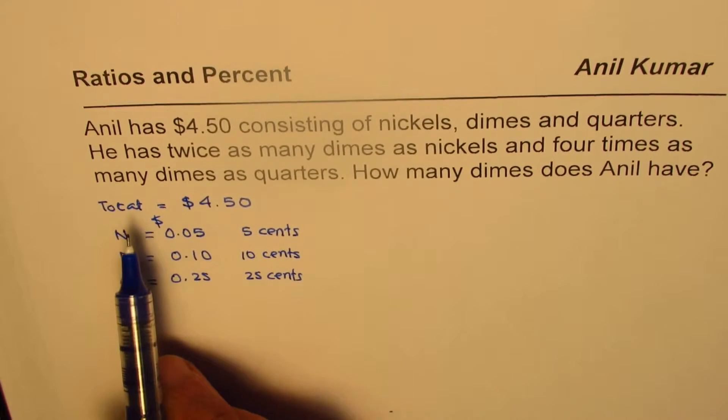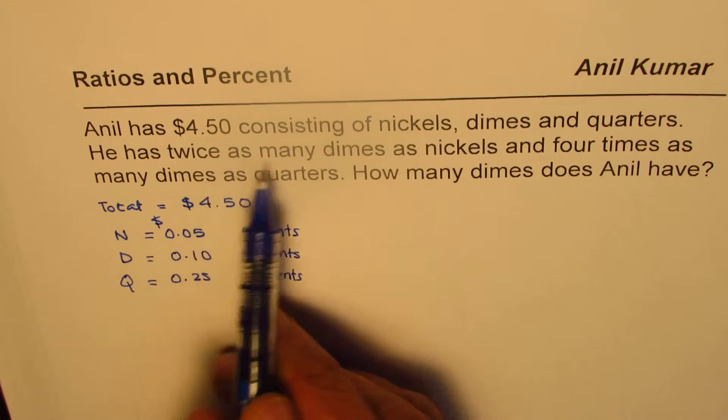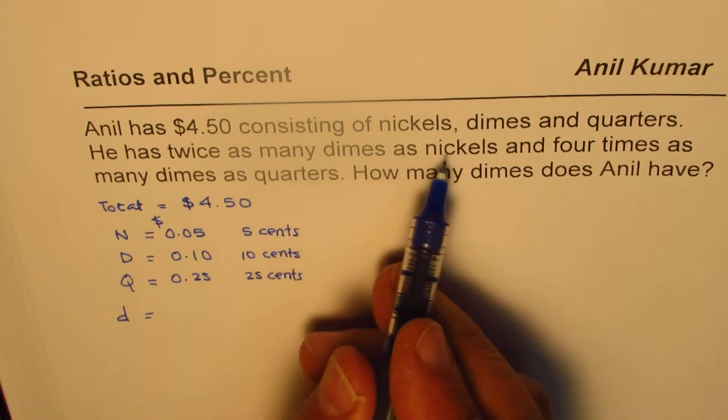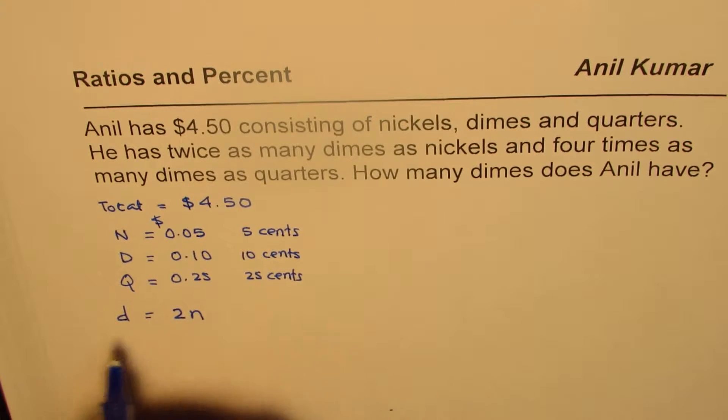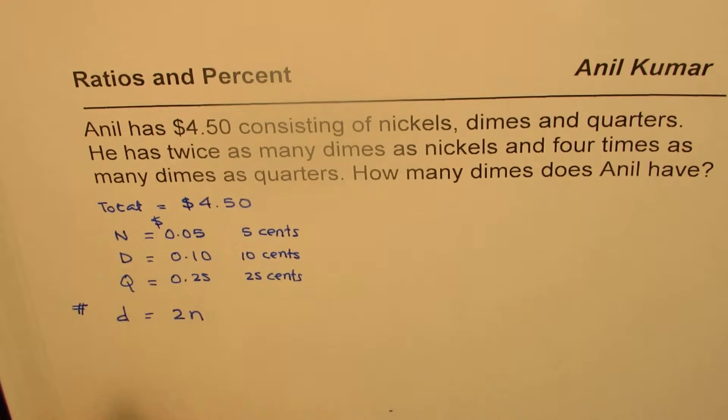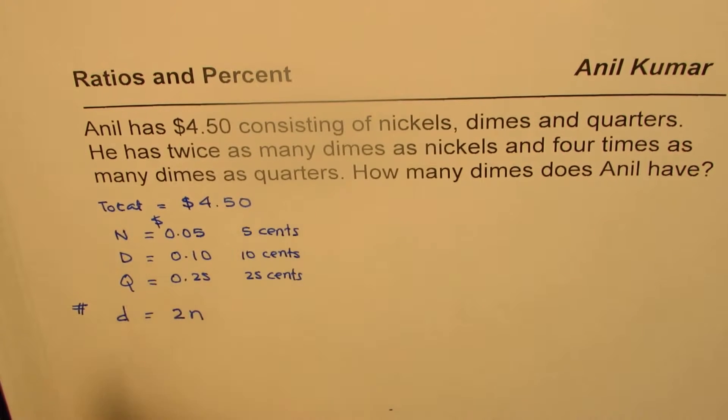Now what we know here is that he has twice as many dimes as nickels. So which are more? Dimes are more. Twice as many dimes as nickels. So if dimes is D, then these are twice the number of nickels. So it is 2 times N. Now in this case, the small d and small n for me is number of dimes and number of nickels. Number of dimes is twice that of nickels, and 4 times as many dimes as quarters. So dimes are 4 times as many as quarters. That means if you compare number of dimes with number of quarters, it is 4 times quarters Q. So that is in case of numbers. This is in case of value. How many dimes does Anil have? So that is the question for you.